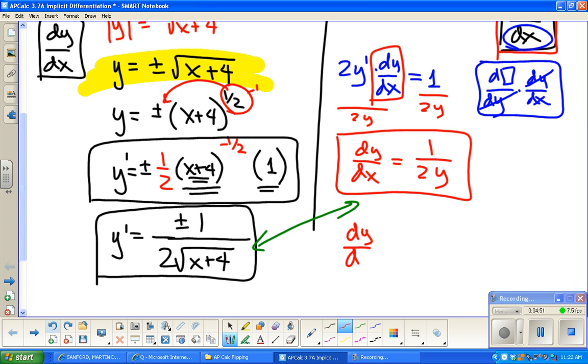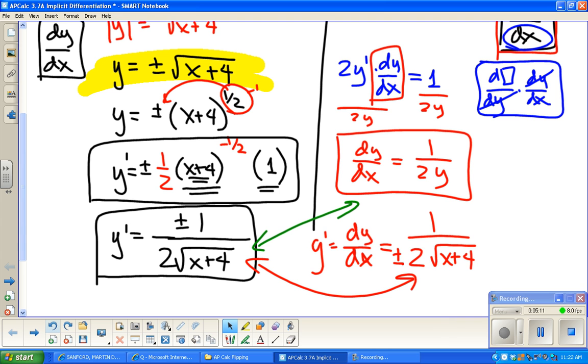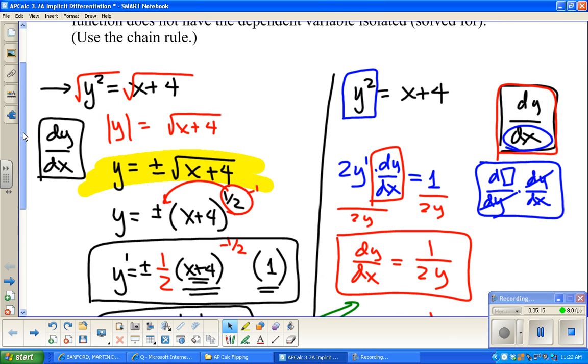So, dy/dx. In other words, y prime, is 1 over 2 times whatever y is. Well, y is positive or negative square root of x plus 4. Well, now do they look the same? I mean, they're not written in exactly the same form, but it's that idea. So, implicit differentiation. Doing the derivative implicitly is that idea where I'm going to take the derivative, just going kind of term by term, piece by piece.